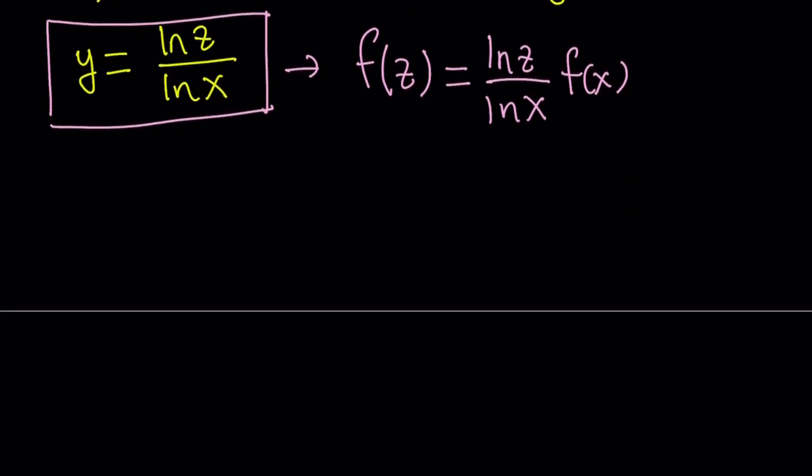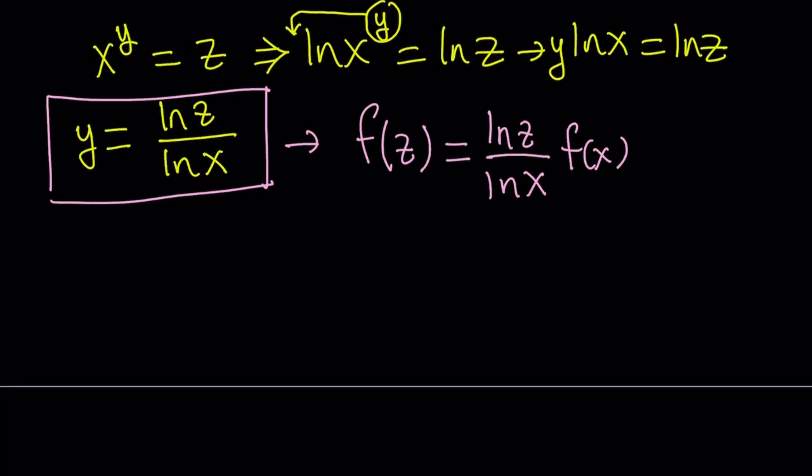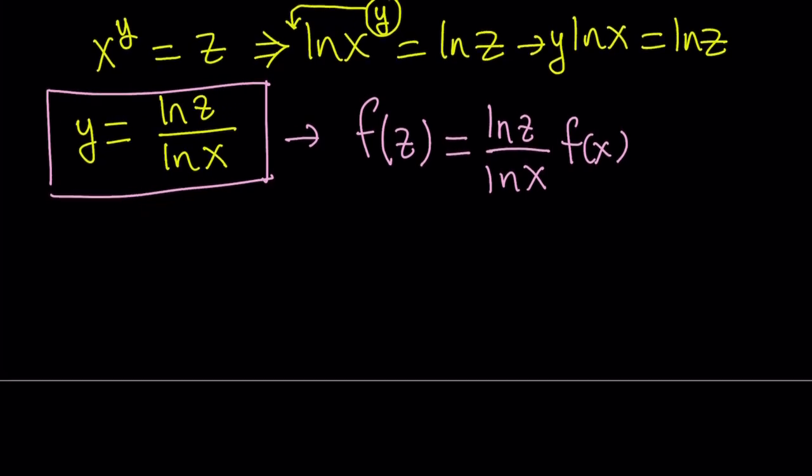Here's what I'm going to do. I would like to get an expression for f of x. So I think it makes sense if I isolated f of x, doesn't it? Let's go ahead and isolate f of x here and let's write this as f of z times ln x divided by ln z.